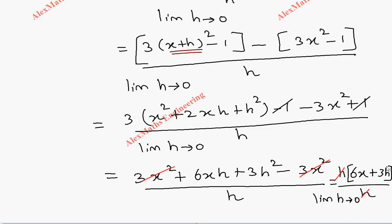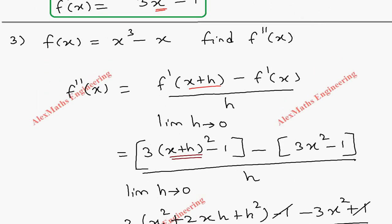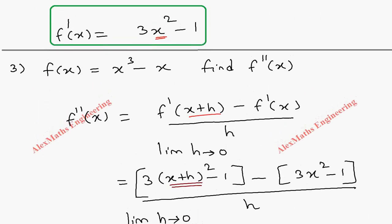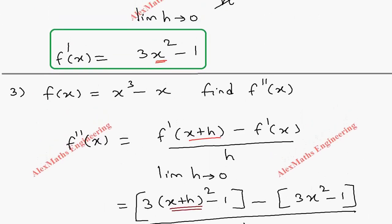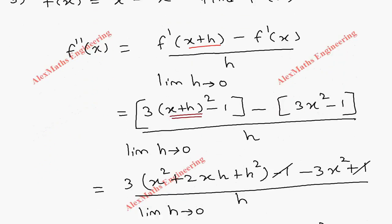After canceling h and substituting h → 0, we get 6x + 3(0) = 6x. So if the function is x³ - x, its first derivative is 3x² - 1 (found in the previous problem), and its second derivative is 6x.